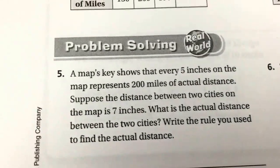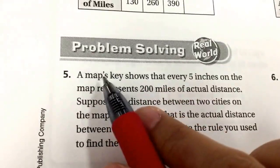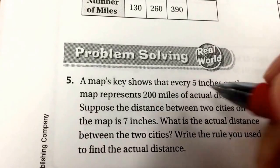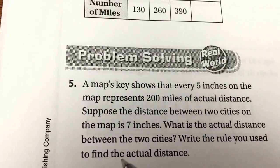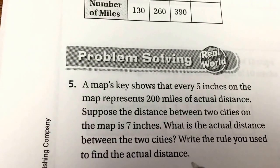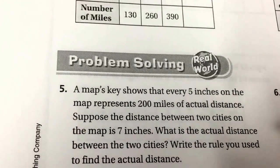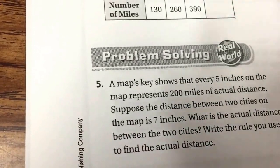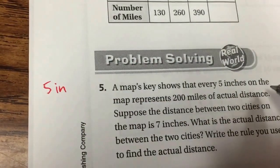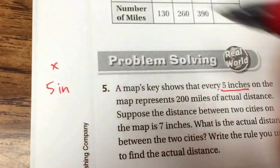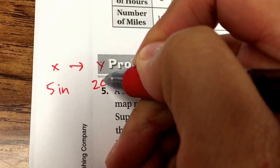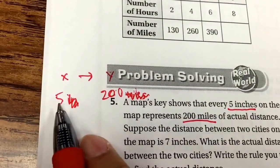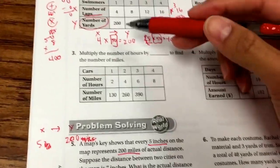Now let's go over one of the word problems. A map's key shows that every 5 inches on the map represents 200 miles of actual distance. The distance between two cities on the map is 7 inches — what is the actual distance? This is like creating your own coordinate grid from data. Five inches is our X and it represents 200 miles as our Y. We need to find the pattern from 5 to 200.